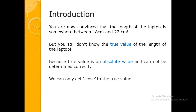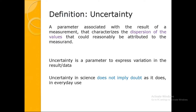You still do not know the true value of the length of the laptop, because the true value is an absolute value and you cannot determine it correctly. It is like knowing that there is a God but you cannot actually see God — you just try to get close. So uncertainty is nothing but doubt, deviation. However you try, your aim should be to go as close to the true value as possible. The technical definition: a parameter associated with the result of a measurement that characterizes the dispersion of the values that could reasonably be attributed to the measurement.